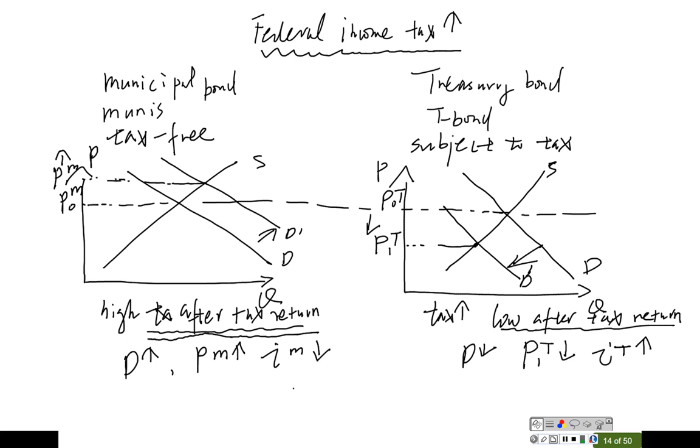So now we can see which interest rate will be higher. Because initially we assume both bonds have the same level of the interest rate, now municipal bond interest rate drops, and the treasury interest rate goes up. So we can find out the treasury bonds' interest rate tends to be higher than the municipal bond interest rate if the federal government decides to increase the tax.